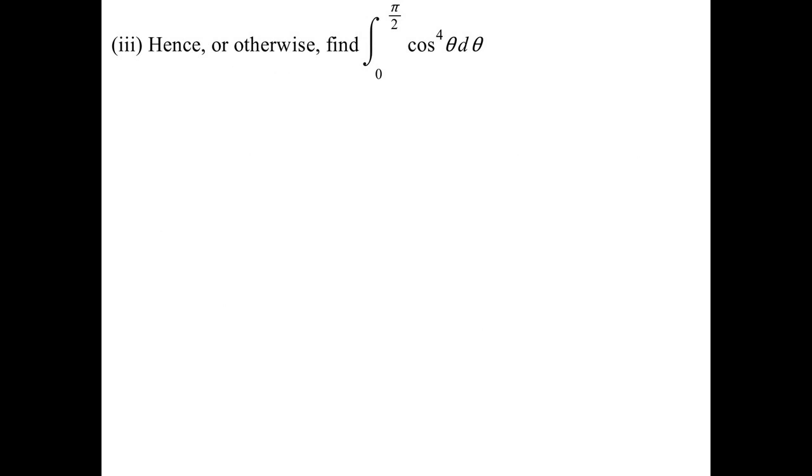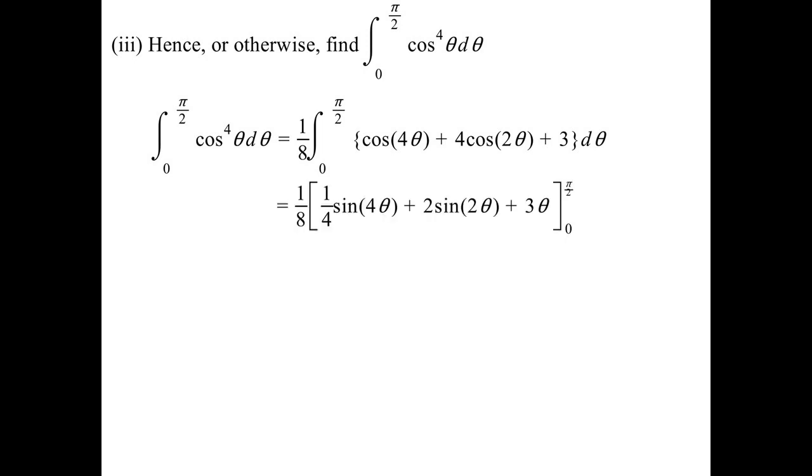Hence or otherwise. So this is where the trig integral came in. So hence or otherwise, find the integral of cos to the power of 4. So we have sort of used complex numbers to do this trig integral. Because we derived the relationship using the complex numbers. But now we know it's that. All right. Use of double angles. So basically trig integrals. Subbing in. And there's the answer 3 pi over 16.